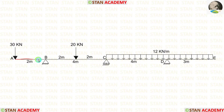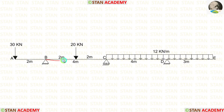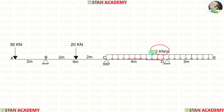In the overhanging AB, we have a point load of 30 kN at point A. In the span BC, there is a point load of 20 kN acting at the center. In the span CD, there is a UDL of 12 kN per meter acting for the full span. In the overhanging span DE, we have UDL of 12 kN per meter.